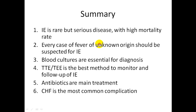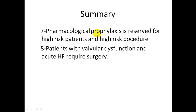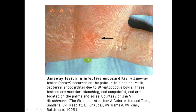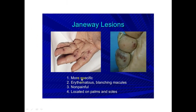Summary: Infective endocarditis is a rare but serious disease with high mortality. Every case of fever of unknown origin should be suspected of infective endocarditis. Blood cultures are essential for diagnosis. Transesophageal echocardiography is the best method to monitor and follow up infective endocarditis. Antibiotics are the main treatment. Congestive heart failure is the most common complication. Pharmacological prophylaxis is reserved for high-risk patients and high-risk procedures. Patients with valvular dysfunction and congestive heart failure require surgery.